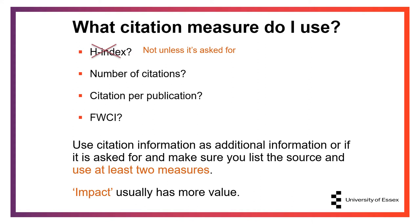If you are specifically asked for your H-index, use Google Scholar to get this figure, as it will be higher. A better metric to use is the Field Weighted Citation Index, or FWCI. A score of 1 means you are receiving the expected number of citations for your field and the format of your work. A score of 2.5 would be 2.5 times more citations than expected. This can be especially helpful for subject areas that don't receive high numbers of citations. However, context matters with FWCI, so you shouldn't just state this figure alone. When using any citation measures, it's important to give context and some qualitative information, not just the numbers. Citation information should be used as additional details, always listing the source and using at least two different measures.